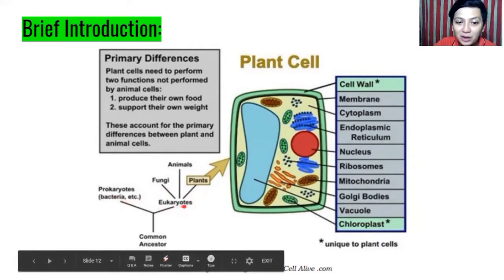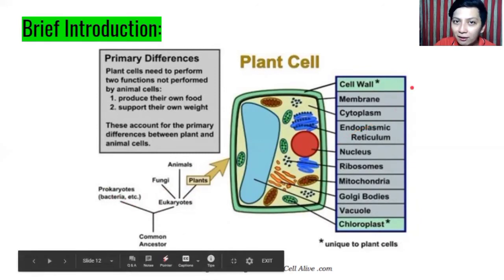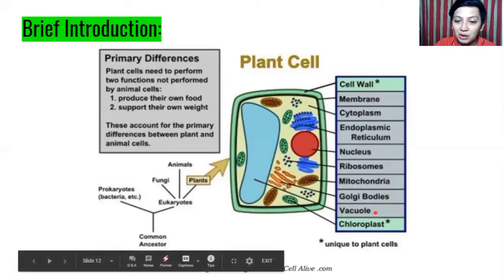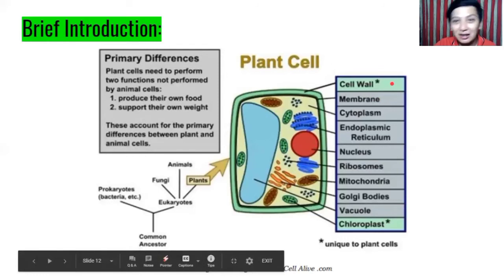Eukaryotes include fungi, animals, and plants — so plant cells have a true nucleus, unlike prokaryotes or bacteria which have no true nucleus. We can see that a plant cell has cell wall, cell membrane, cytoplasm, endoplasmic reticulum, nucleus, ribosomes, mitochondria, Golgi bodies, vacuole, and chloroplasts. Those marked with an asterisk are unique to plant cells — cell wall and chloroplasts. Cell wall gives rigidity and shape; chloroplast is for photosynthesis.